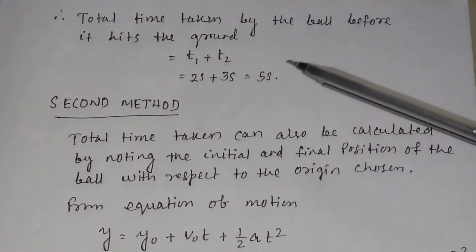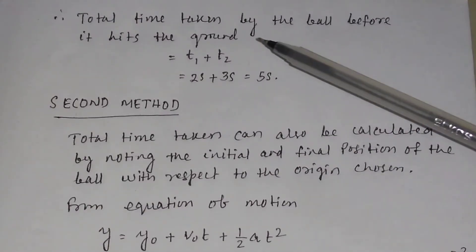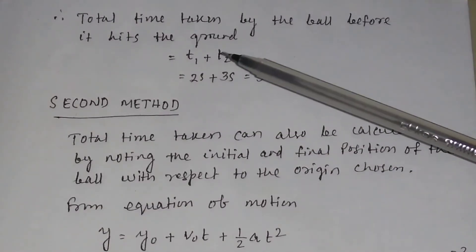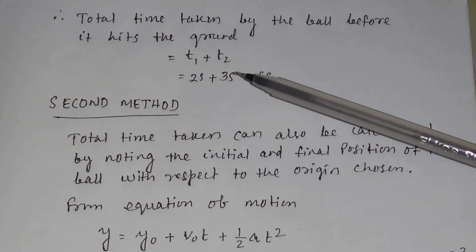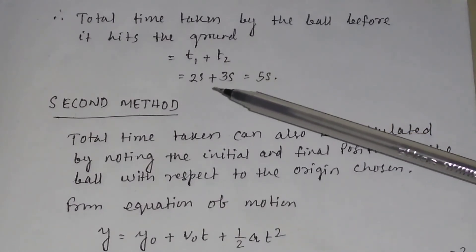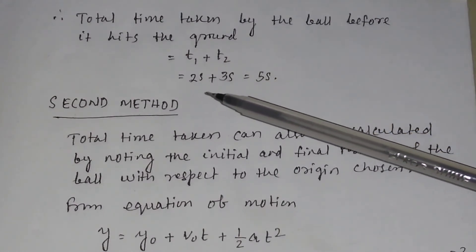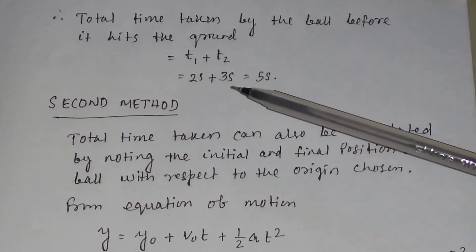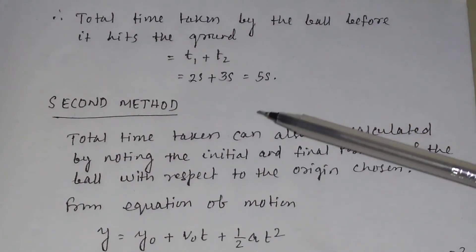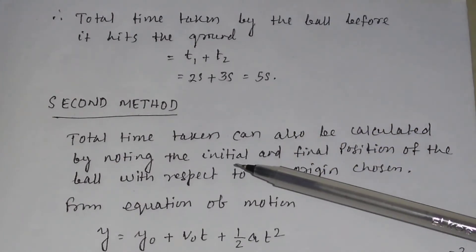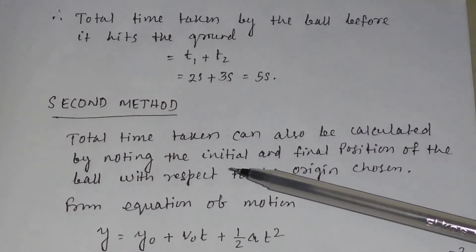So the total time taken by the ball before it hits the ground is T1 plus T2, that is 2 seconds plus 3 seconds, which equals 5 seconds.